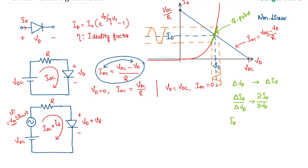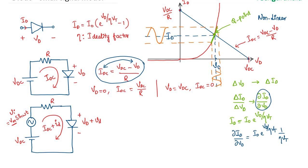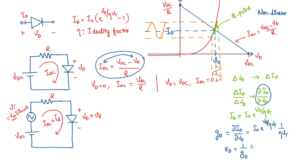The diode current equation can be approximated by neglecting the minus one, which eventually becomes I0 times e^(VD/ηVT). So the partial differentiation of this diode current equation gives dID/dVD equal to I0 · e^(VD/ηVT) times 1 over ηVT. This is the conductance of the diode. 1 over GD is RD, and since this term is ID — the DC current flowing through the diode due to DC biasing — we can write RD equals ηVT over ID.